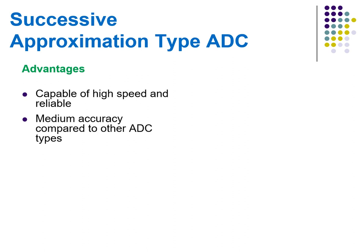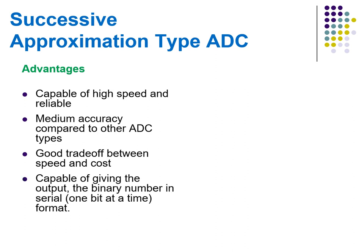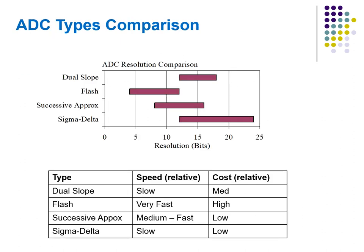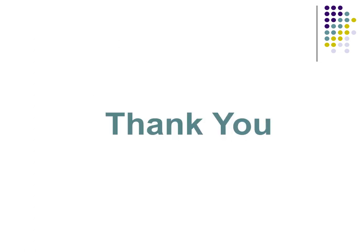Advantages of successive approximation ADCs: capable of high speed, reliable, medium accuracy compared to other ADCs, good trade-off between speed and cost, and capable of giving output as a binary number in serial format — one bit at a time. Disadvantages: at higher resolution, successive approximation ADCs will be slower and are limited to approximately 5 MSPS. We can also see a comparison of different types of ADCs with respect to resolution, speed, and cost. I hope you found this video useful to understand the process of analog to digital conversion. Thank you.